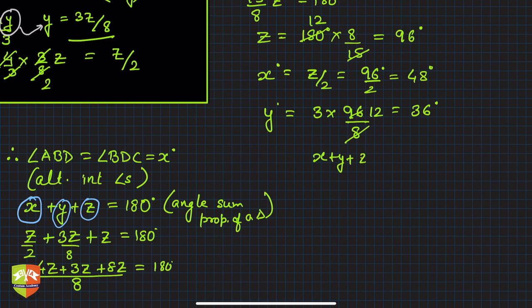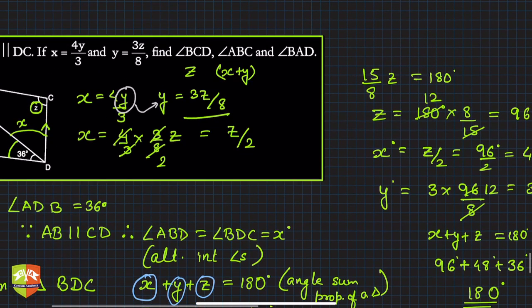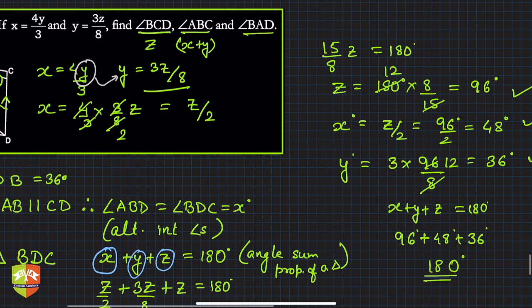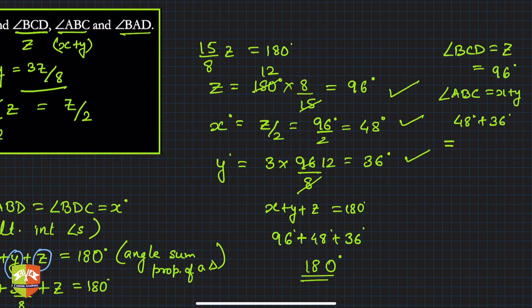Now for the required angles: angle BCD = z = 96 degrees. Angle ABC = x + y = 48 + 36 = 84 degrees.